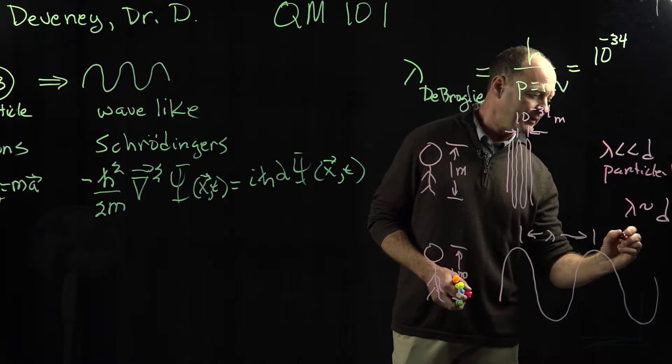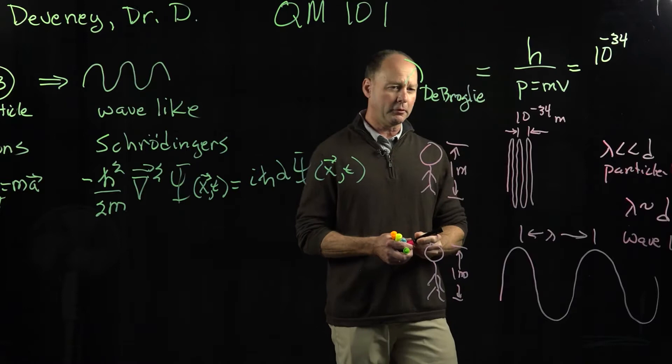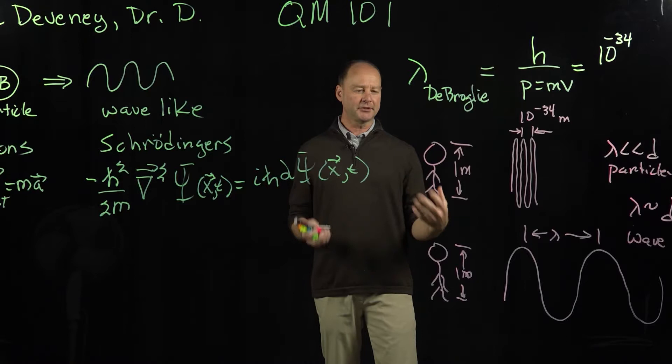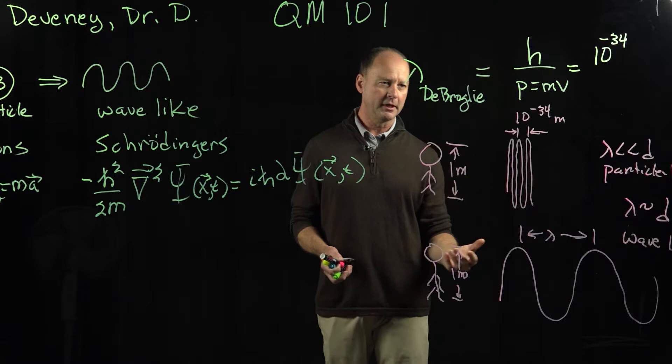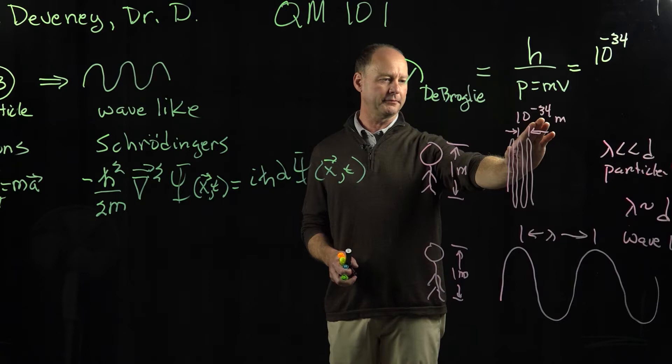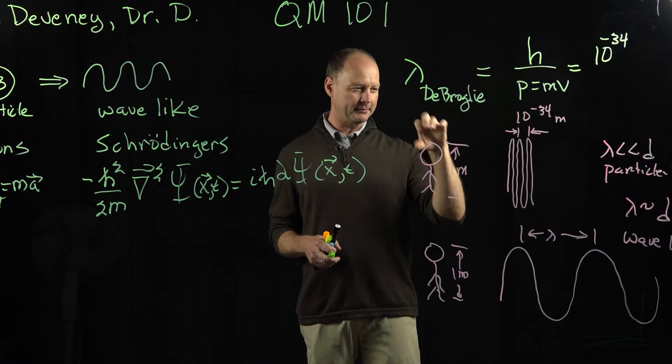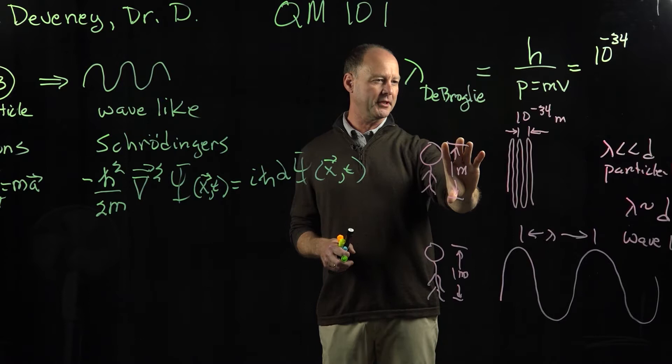And so basically the story of quantum mechanics is that everything has a wave, and it depends upon the size of you, the size of how you're measuring, that depicts whether or not you experience the object as a particle or a wave. Clearly with a baseball, it has a wavelength on the order of 10 to the minus 34, and if you're Chris Sale and you're picking up the baseball and throwing gas at about 95 miles an hour, that baseball's wavelength is so much less than Chris Sale's that he experiences the baseball as a particle.